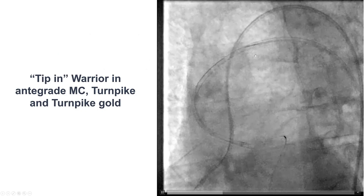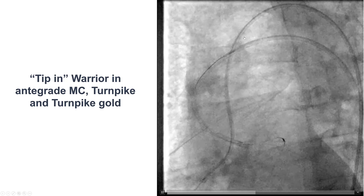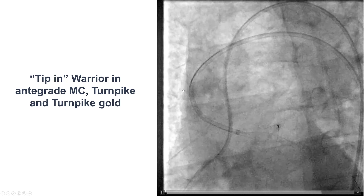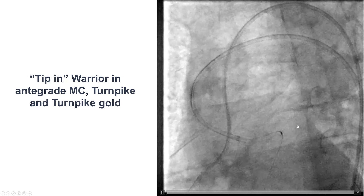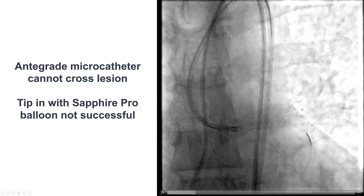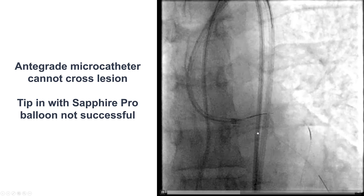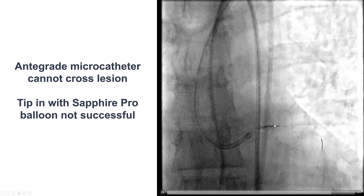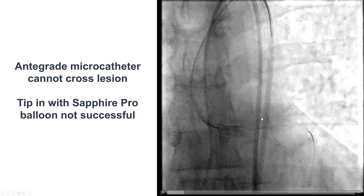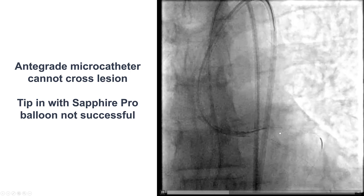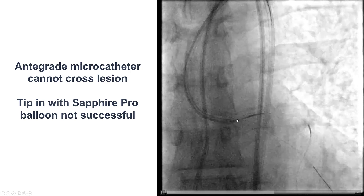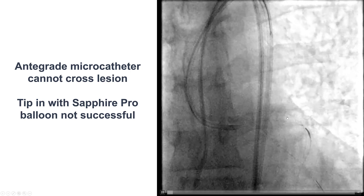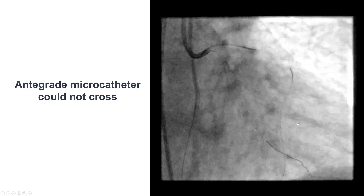That's what we did here — the tip-in technique. We advanced a Turnpike microcatheter, which successfully intubated the retrograde guide wire. We hoped the antegrade microcatheter would cross through the CTO, but unfortunately it could not. We also tried with the Sapphire balloon, which is the lowest profile balloon currently available, but were unable to cross.